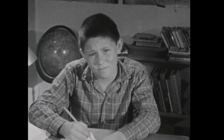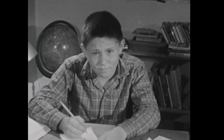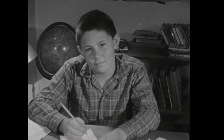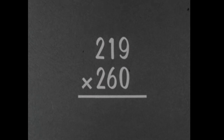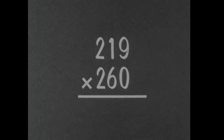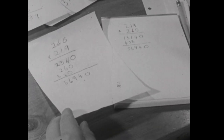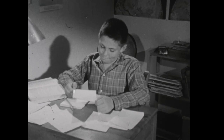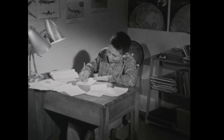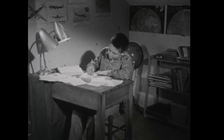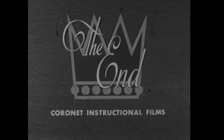How can you be sure this is the correct answer? Well, one way is to repeat the operation, but I'll show you another method. You can check your multiplication of 260 by 219 by reversing the multiplicand and the multiplier. If you've multiplied correctly, the product of 260 times 219 will be the same as the product of 219 times 260. The two products are the same, so the answer checks. Fred has learned how to overcome his troubles in multiplication. But what about you? Does your multiplication need brushing up? Why not start now?